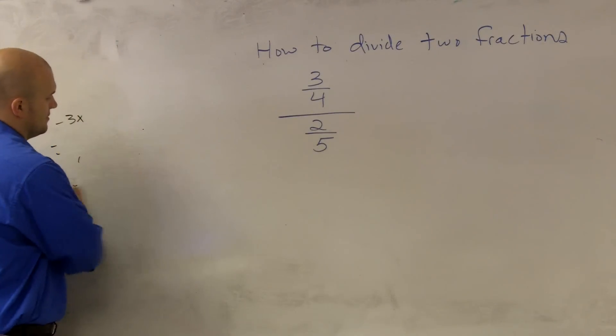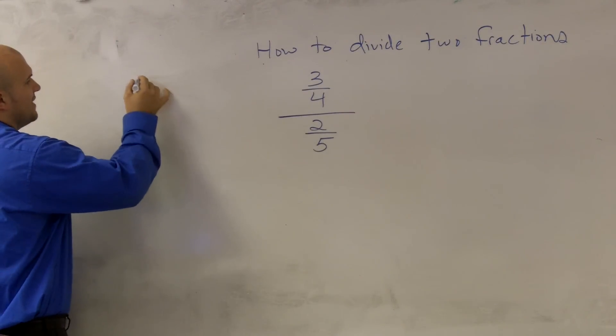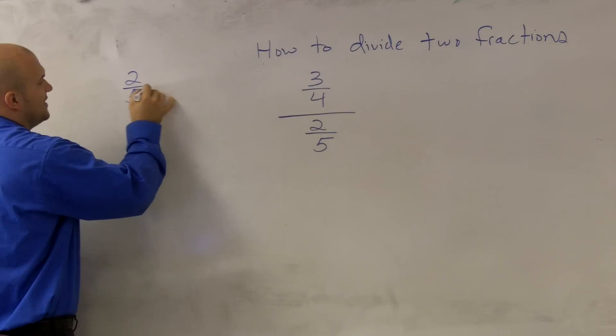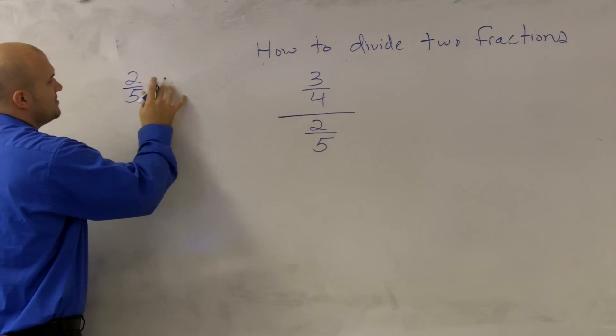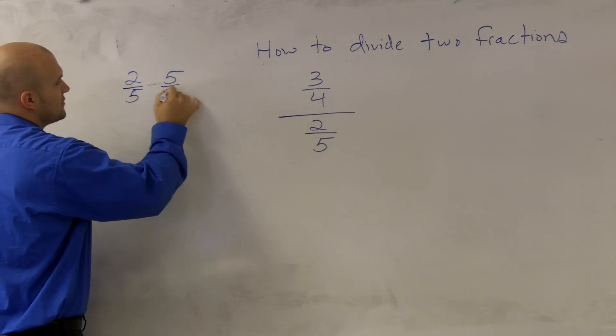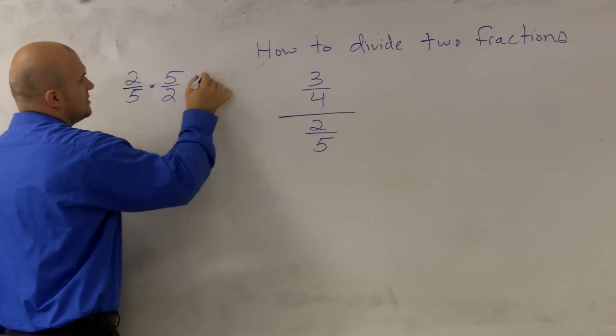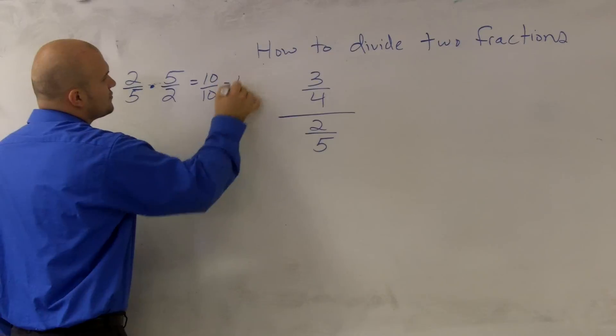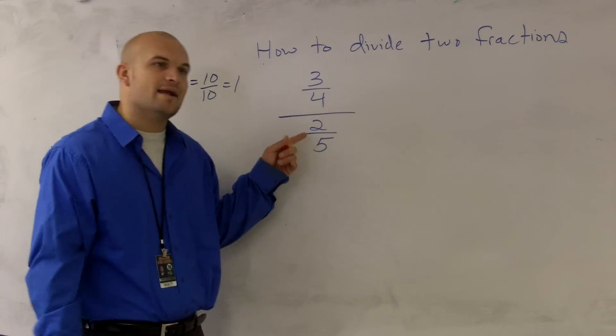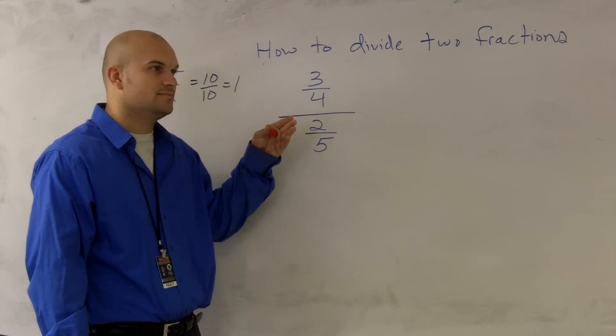if I have 2/5, the reciprocal of 2/5 is going to become 5 over 2. And the reason why I call it the reciprocal is because when I multiply these, I get 10 over 10, which equals 1. And then anything divided by 1 is just going to become its own.